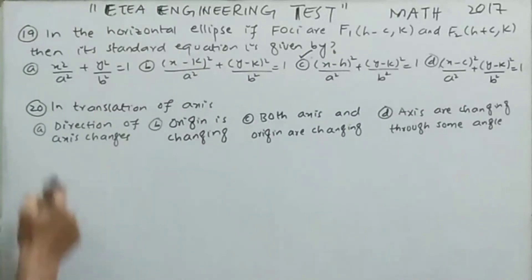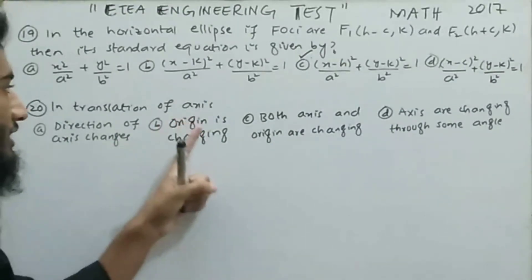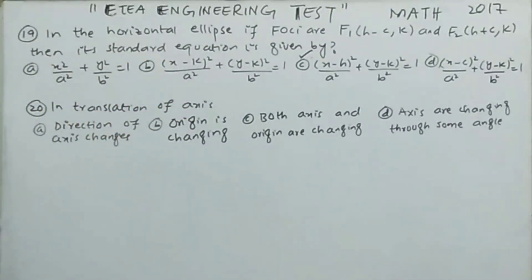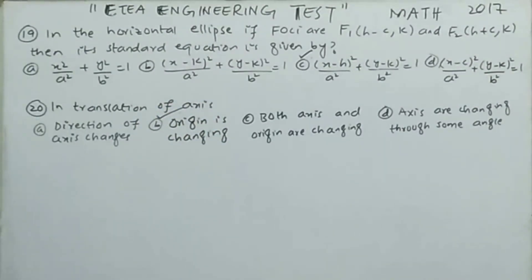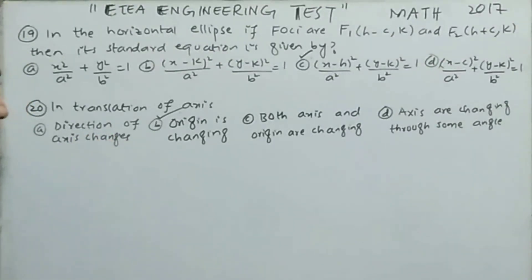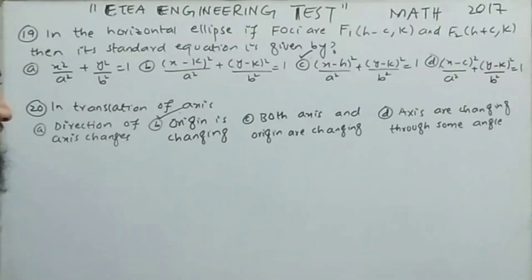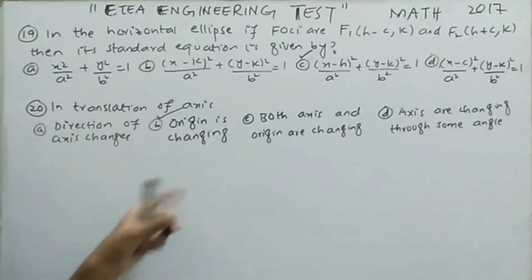MCQ number 20: in the translation of axes, which of the following changes — direction of axes, origin, both, or axes rotate through some angle? There are three types of transformation: translation of axes (only origin changes), rotation of axes (direction changes, origin stays fixed), and general transformation (both change). Since this MCQ asks about translation, only the origin changes. The correct option is option number B.